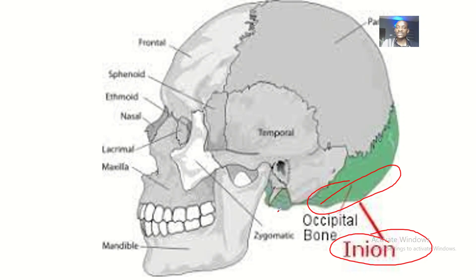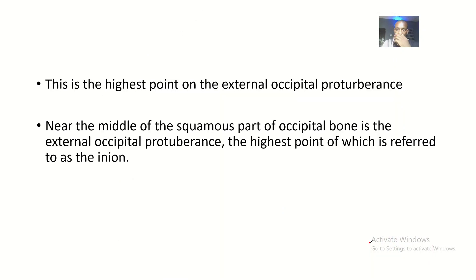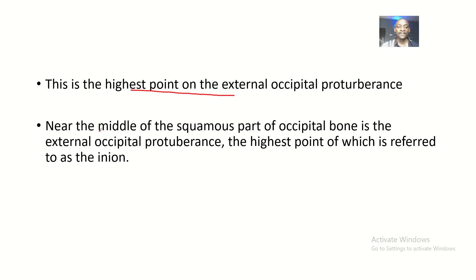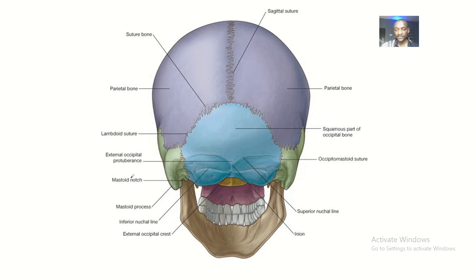The tip of this area is what we call the inion. The inion is the highest point on the external occipital protuberance. Near the middle of the squamous part of the occipital bone is the external occipital protuberance, and the highest point of this external occipital protuberance is referred to as the inion.